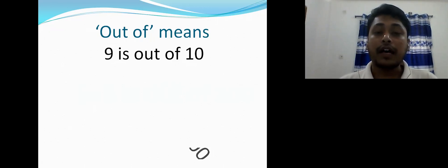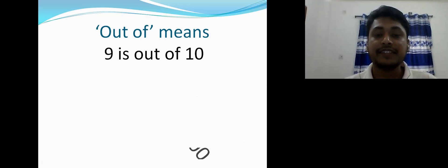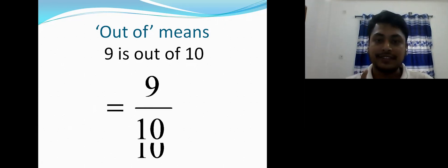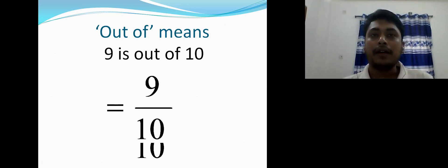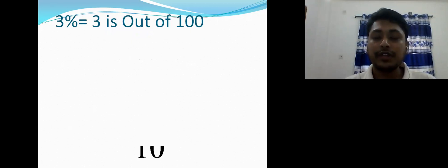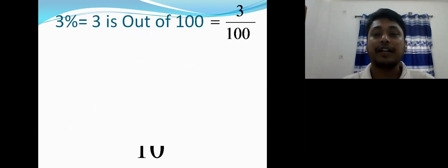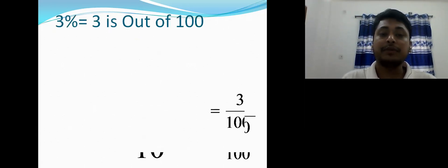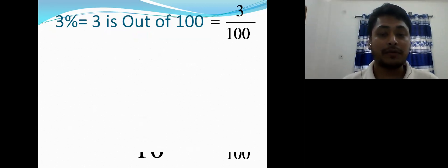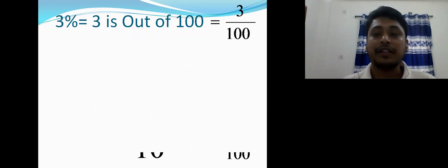Suppose you got nine out of ten — your teacher will write it as 9/10 on your copy. If you got forty out of hundred, that will be 40/100. So three percent means three is out of hundred, which can be written as three divided by hundred. Just as nine out of ten means 9/10, similarly three percent means 3/100.